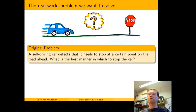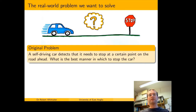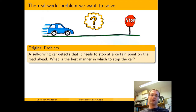So what was the problem that was brought to us? It was a problem involving self-driving cars: what do you do when the self-driving car system realises that it needs to stop at a certain point on the road? The problem as it was brought to us was roughly as follows — a self-driving car detects that it needs to stop at a certain point on the road ahead. What's the best manner in which to stop the car?